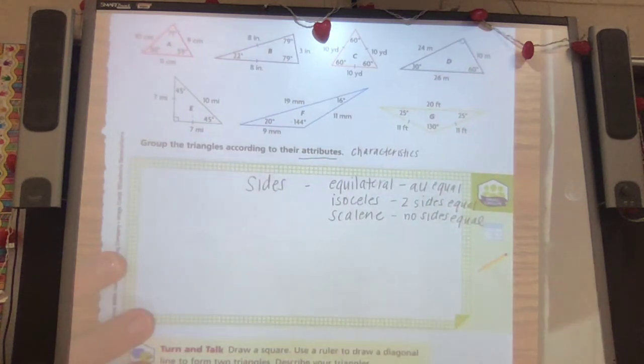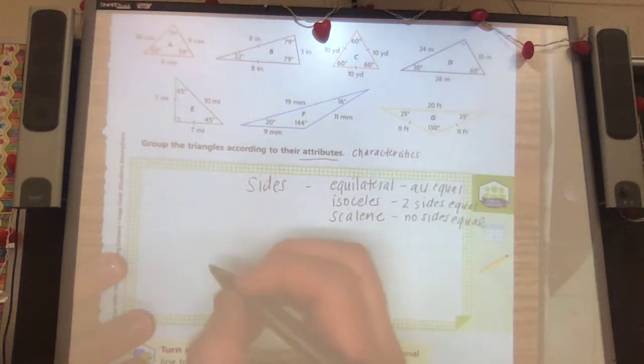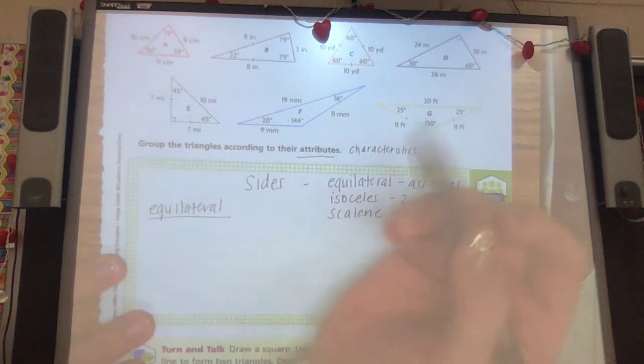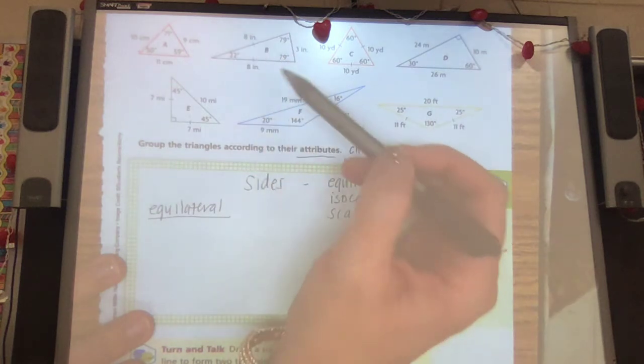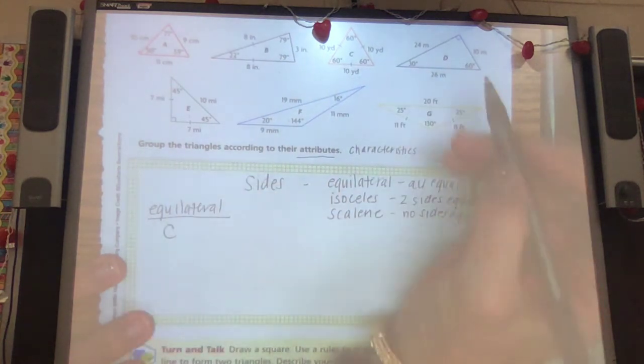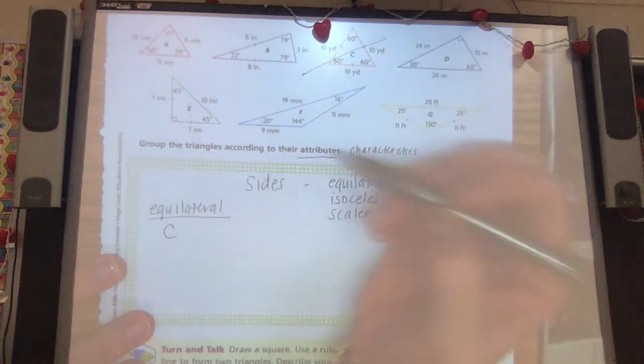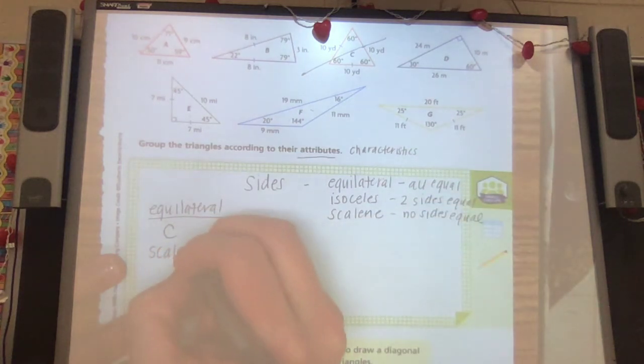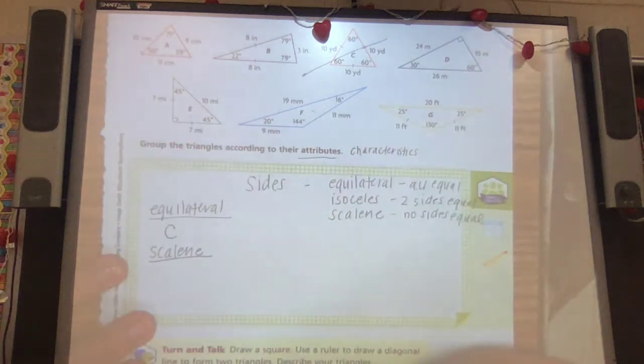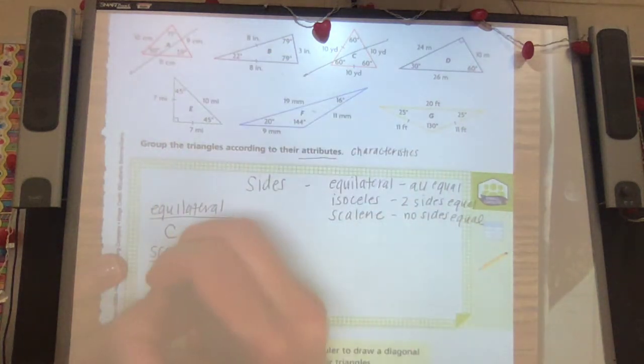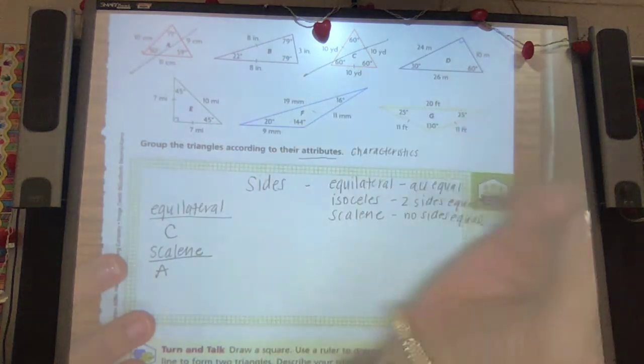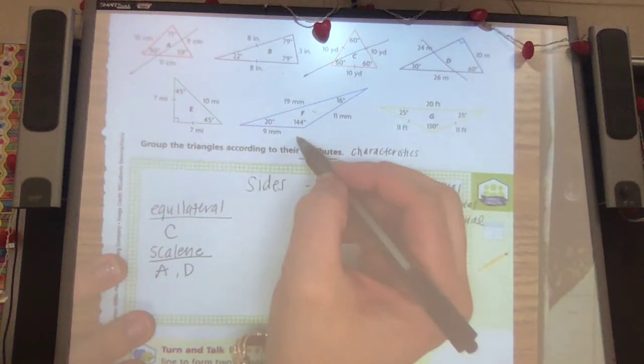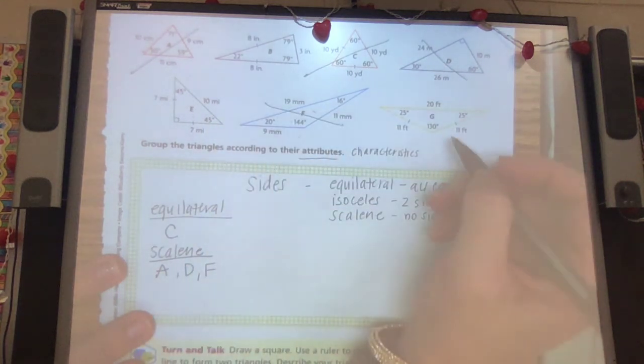So I'm going to put them into some groups. So I'm going to have my equilateral triangles, ones with equal sides, and that would be C. I'm going to mark it out. That's it. Okay. Let's do scalene. Remember, scalene has no equal sides. That'd be A, because they're all different. 8, 3, 24, 26, 10, that'd be D. F. All right.